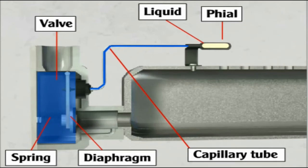If the flame goes out, the phial cools, the pressure is relieved from the diaphragm, and the valve closes.